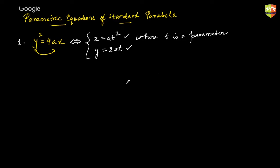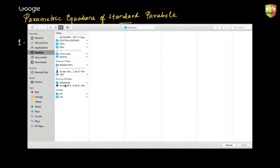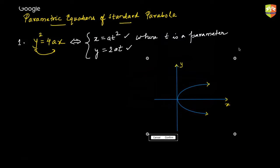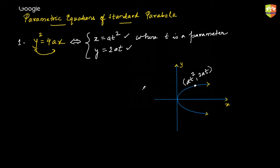The use of parametric form is in choosing a point on the curve. If I ask you to choose a point on y² = 4ax, I would prefer choosing it as (at², 2at) rather than as (x, y) or (x₁, y₁). Parametric form really saves a lot of time because we use only one variable — the parameter t.